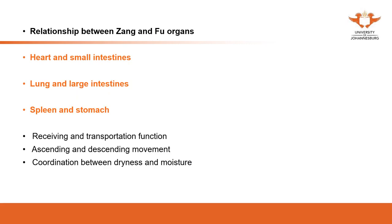Next we are going to talk about the relationship between zhang and fu organs. Previously all examples discussed were relationships between two zhang organs. Now we discuss zhang and fu organs. This relationship relies on the different characteristics of zhang organs and fu organs. Zhang organs need to store and cannot discharge. Fu organs can receive food but need to discharge — they should not store.